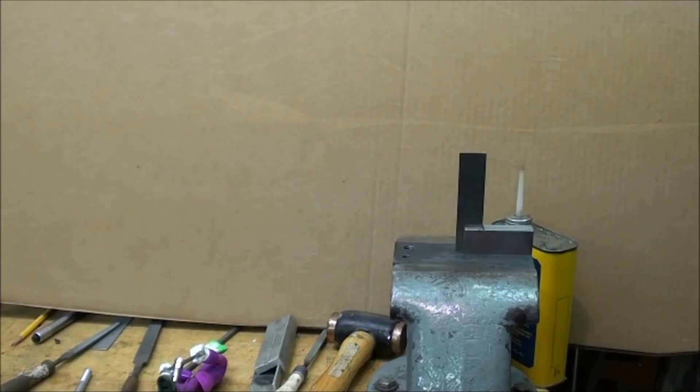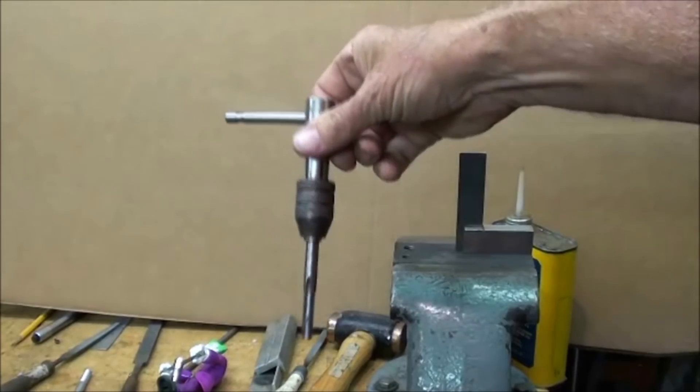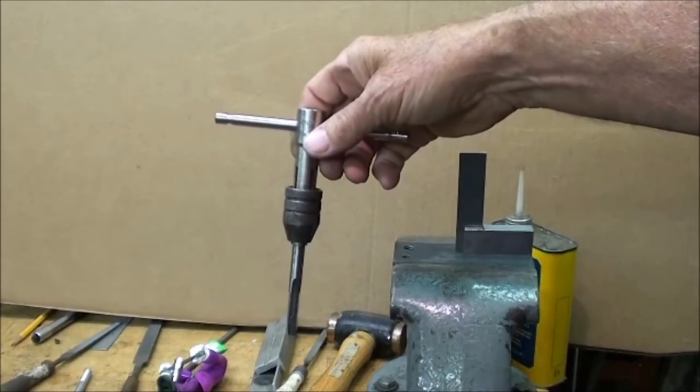Now this next method is probably the method you're going to use the most often and I simply call it the sighting method. And you can use a T-handle tap wrench or a straight wrench, whatever your preference is.